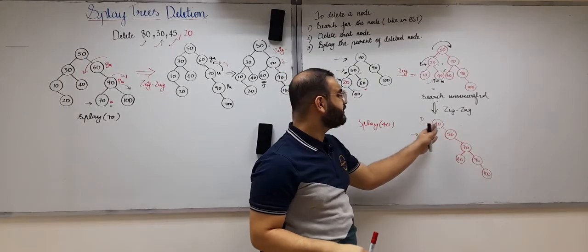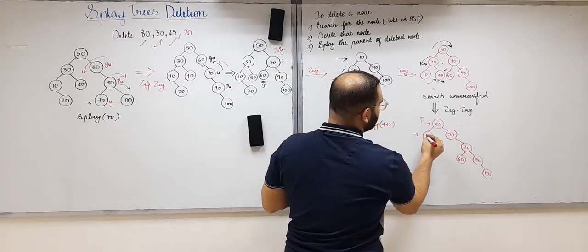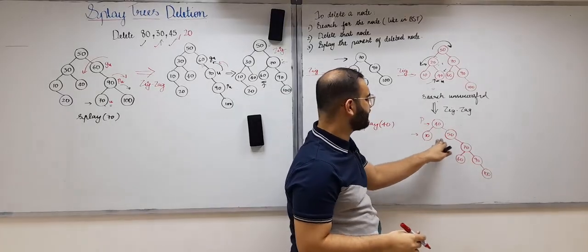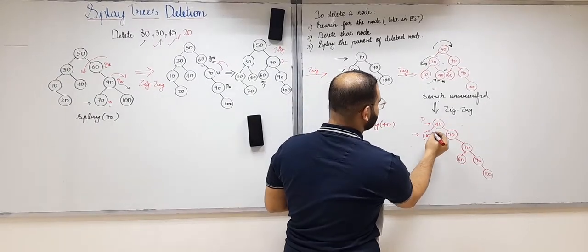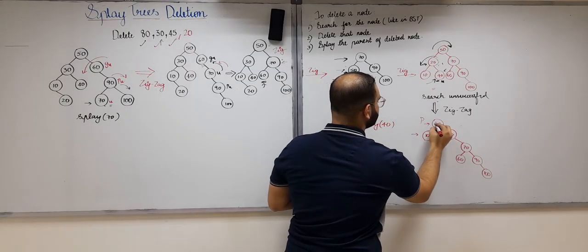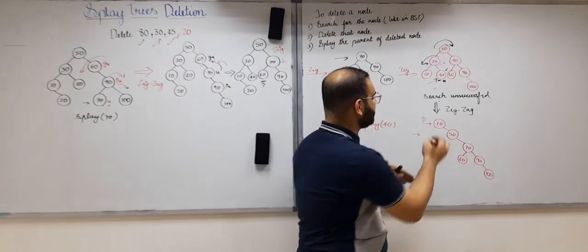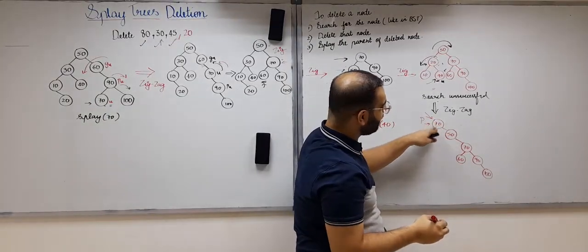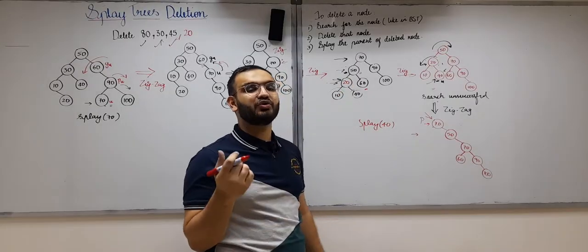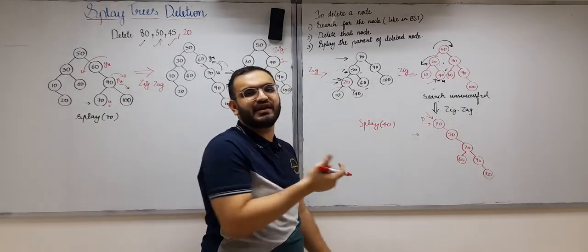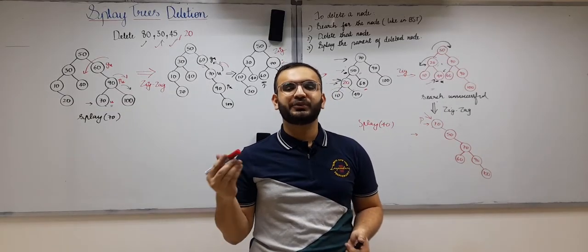Suppose we want to delete 40, which is the root and has two children. We replace it with its in-order predecessor, which is 10, and delete that in-order predecessor. We then need to splay the parent of the deleted node — but the deleted node's original position is the root, and the root has no parent. This is Case 5: when the node to be deleted is the root of the splay tree, there is no splaying because the root has no parent. So we have seen all the cases for deletion in a splay tree.